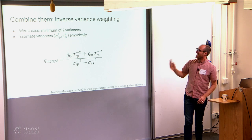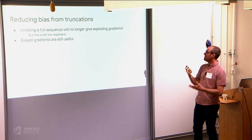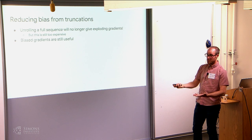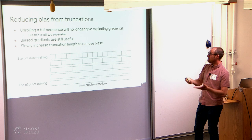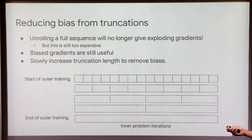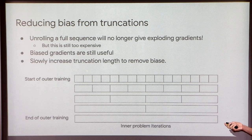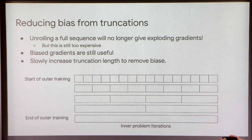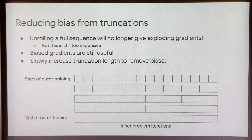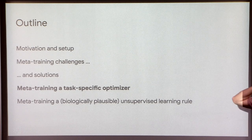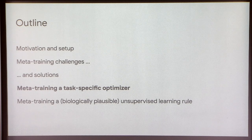To deal with the bias from truncations, we do something much simpler: unrolling the entire sequence is still quite expensive, so we anneal this. We start out by unrolling many short segments, and then over the course of meta-training, we increase the length of the unrolls until at the very end of meta-training we are unrolling over the full 10,000 training steps. We demonstrate the utility of this by using it to train optimizers, especially an optimizer targeted at a specific set of tasks.